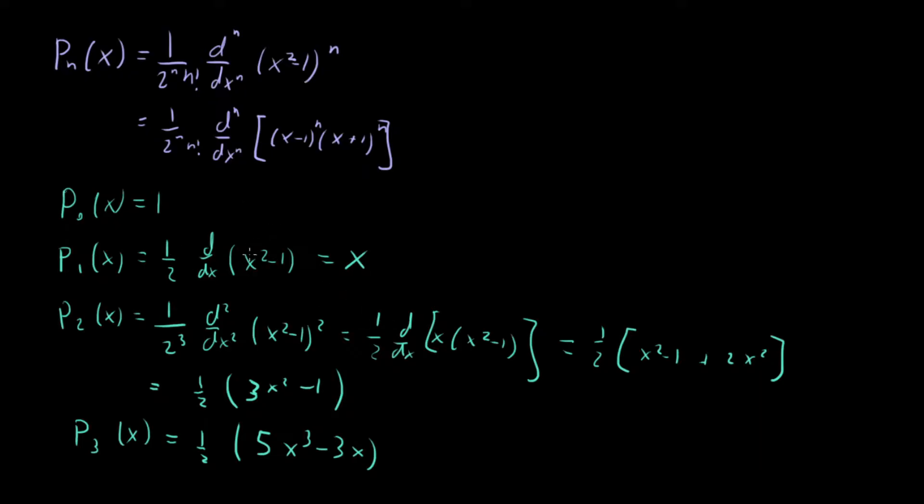A couple observations to make about what we're seeing here is this. One is that what we're seeing is that even values of n, like 0 and 2 right here, those correspond to even polynomials. Here we have constant 1, here we have x^2 minus 1, so that's also even. And then for odd n, what we have is odd order polynomials. Here, x^3 - x, just x. So we see that even n correspond to even functions, odd n correspond to odd functions.